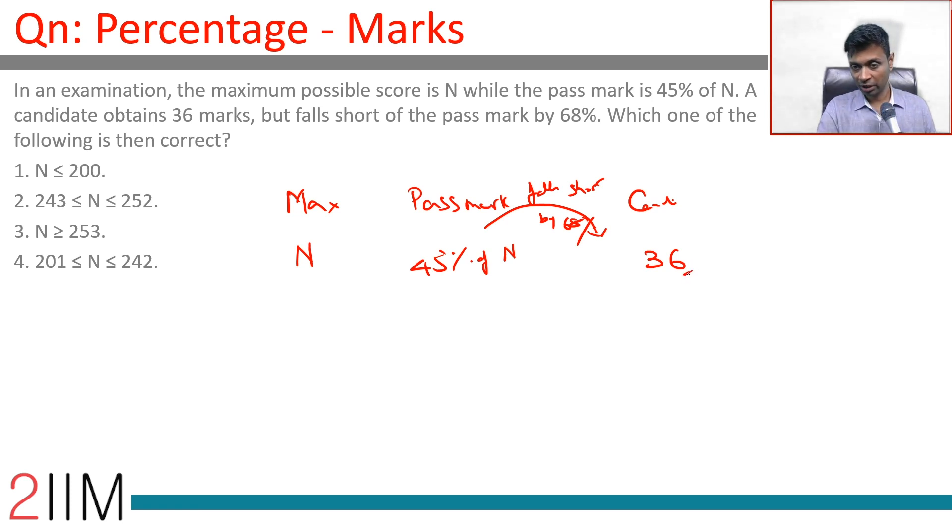So this 36 falls short of 45% of N by 68%, or this 36 is 32% of 45% of N.